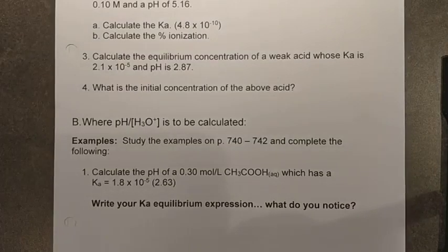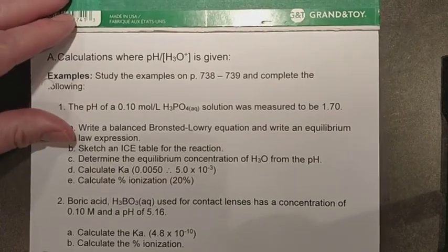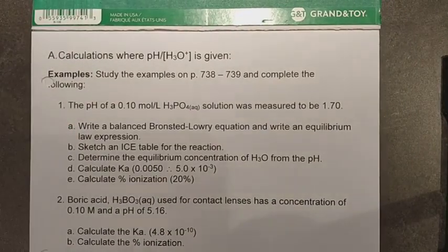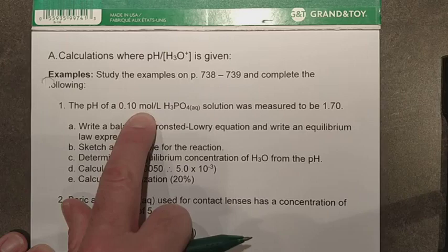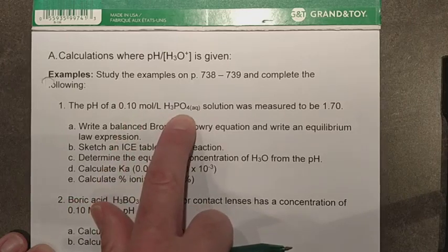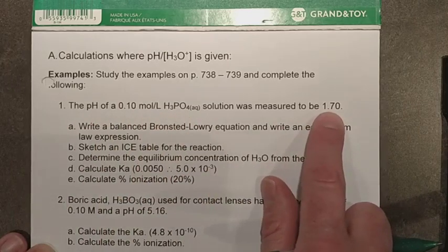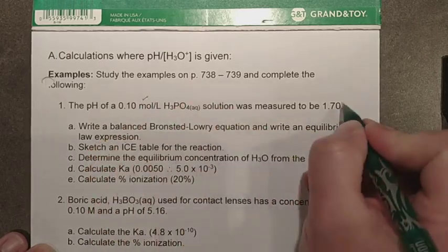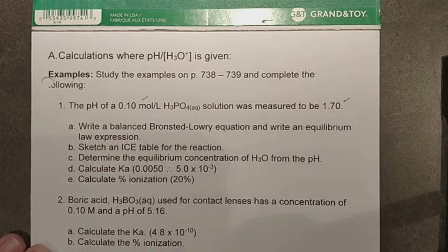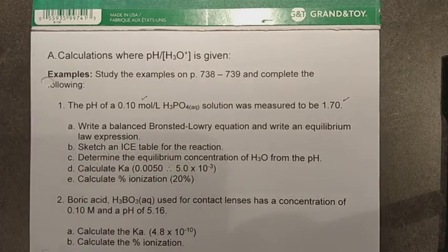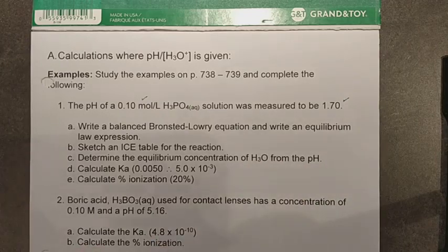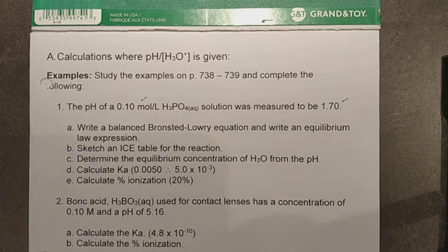We'll see if we can get through the first example before the 10-minute time limit on these videos runs out. We're working with a 0.1 molar phosphoric acid solution with a pH of 1.70. So we have the concentration of the weak acid and we have the pH. What we want to do first is come up with a Bronsted-Lowry equation for this equilibrium, and then build an ICE table to help determine the hydronium concentration from the pH.